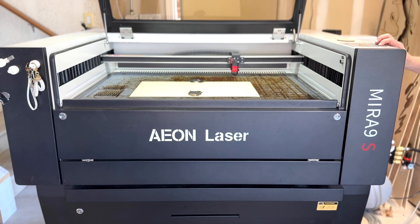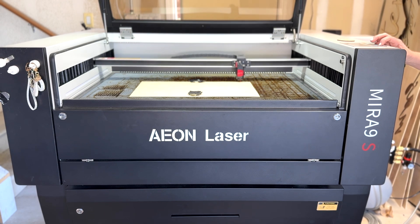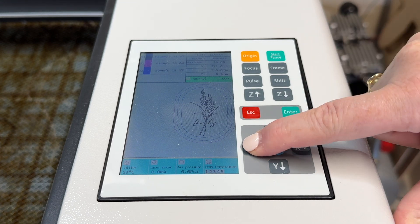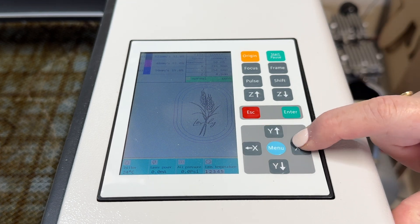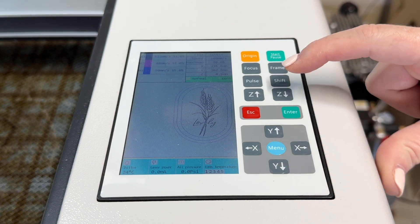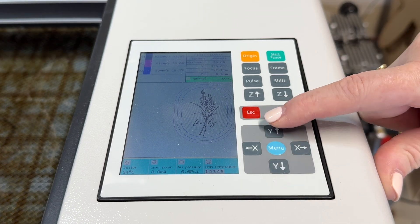Then I can move over to my keypad and I'll use the x and y up and down arrows to position the head of my laser over my material. Most lasers are going to have a red dot which will indicate that you're in the right spot, so you're just moving that red dot to that upper right hand corner or wherever you choose to start your job.